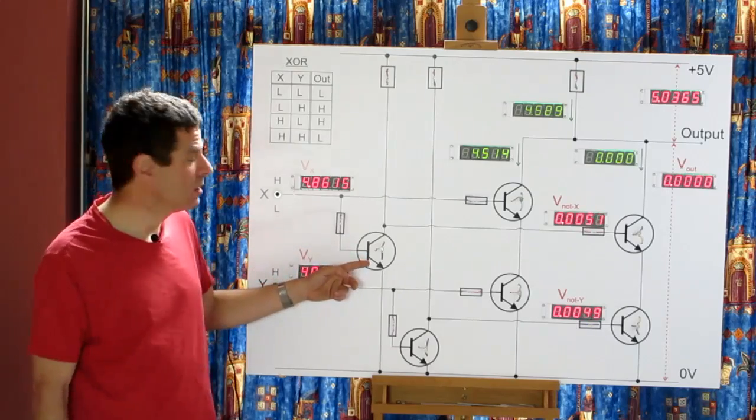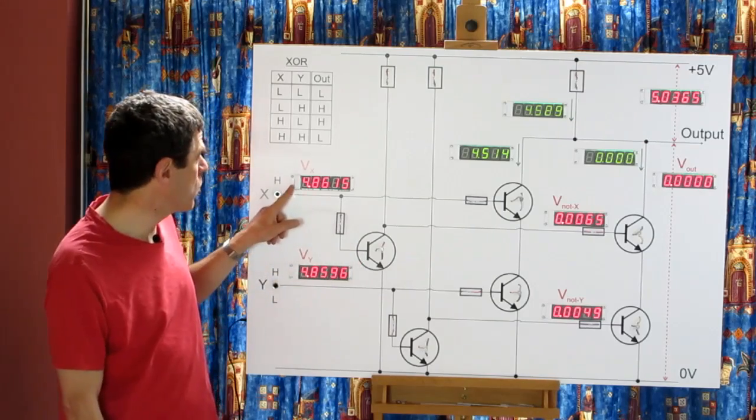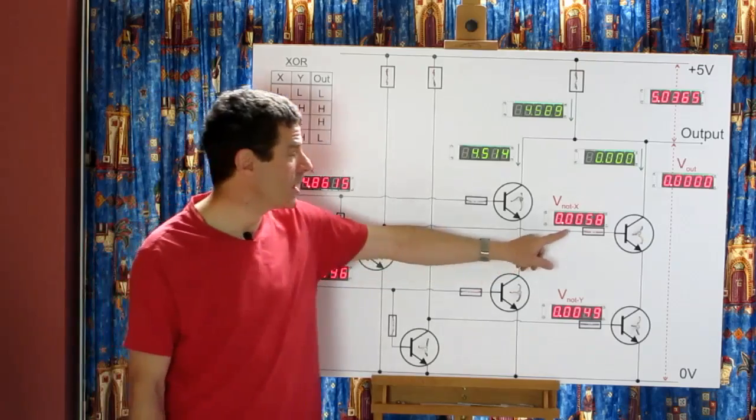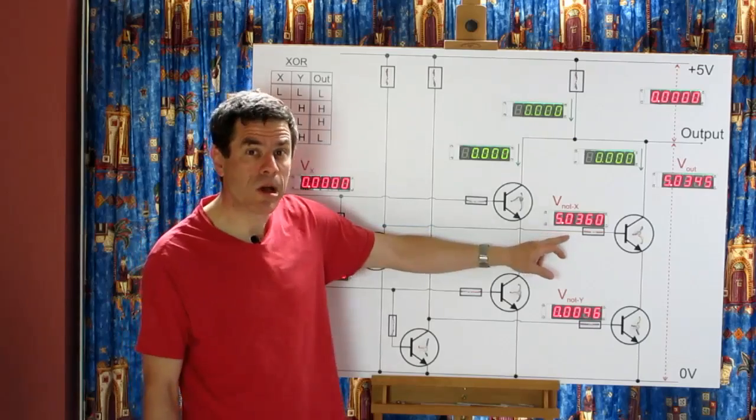This transistor is acting as a single transistor, it's acting as an inverter, and it's inverting the X input. So when X is high, not X is low. And when X is low, not X is high.